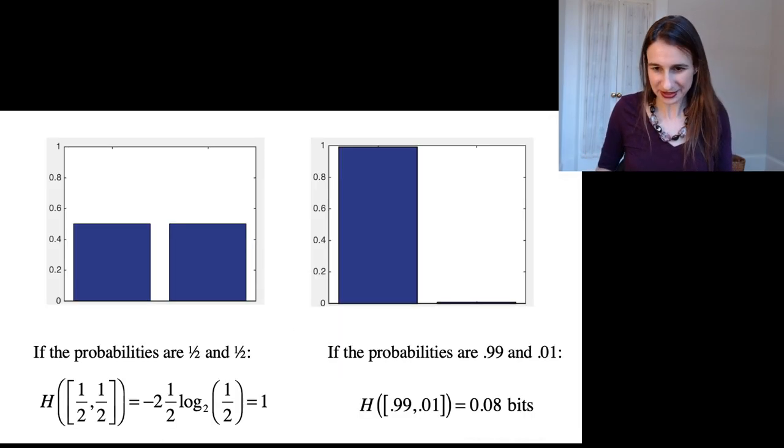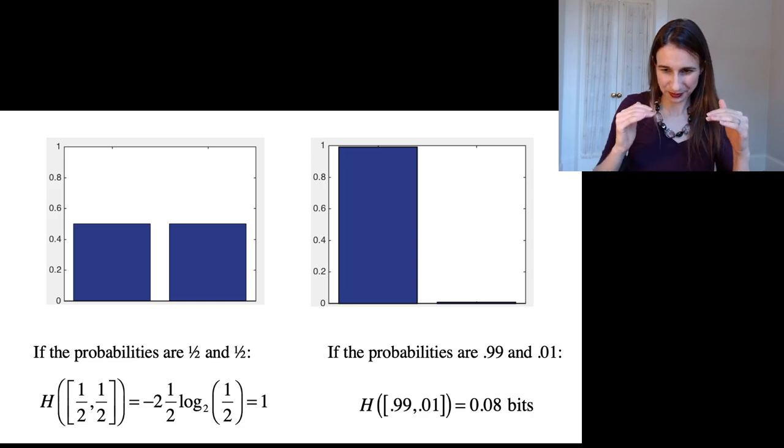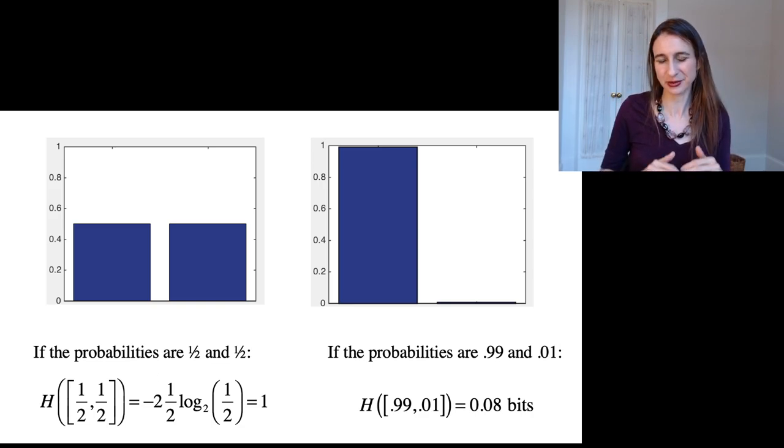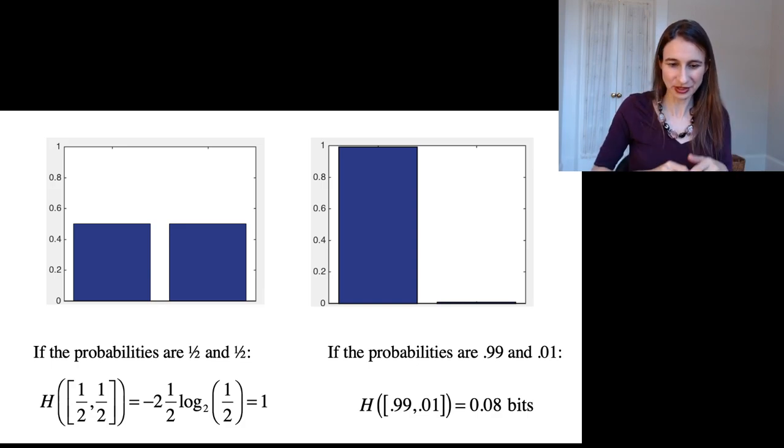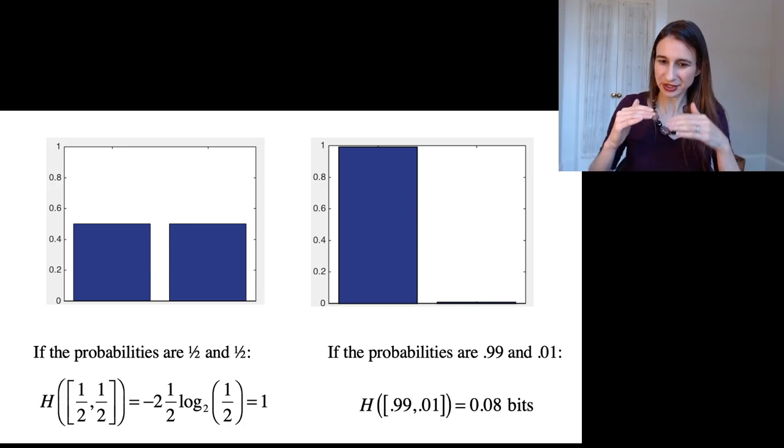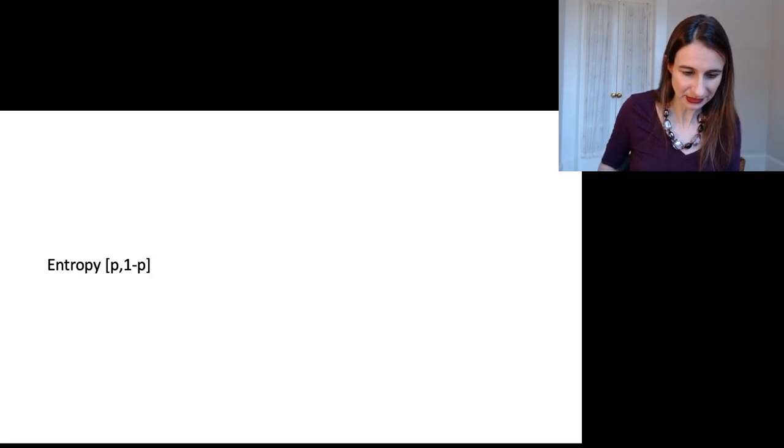So yeah, just to put that intuition back on the board. If the probabilities are 1/2, 1/2, the entropy is maximized because it's equal. And if the probabilities are very uneven, then the entropy is very small.